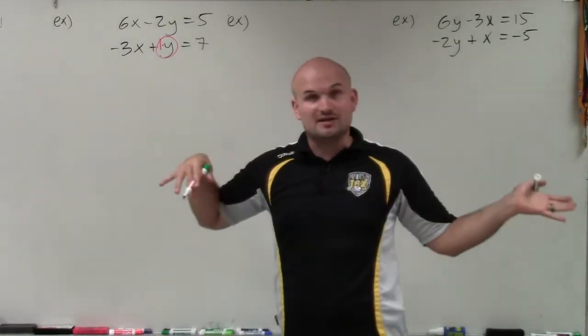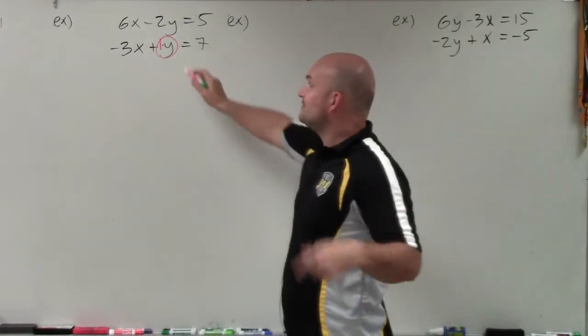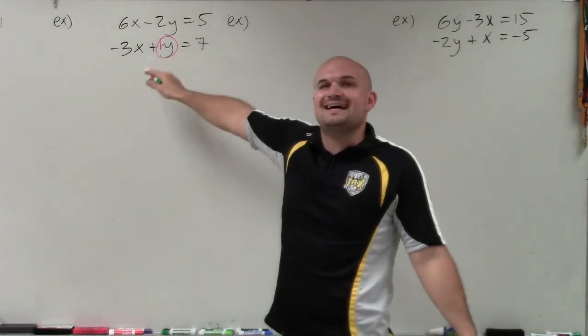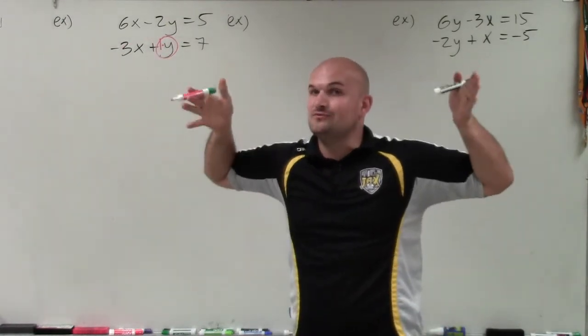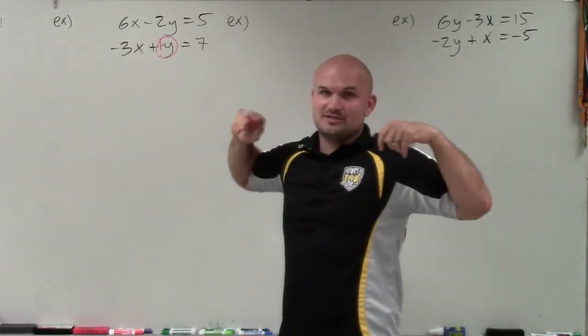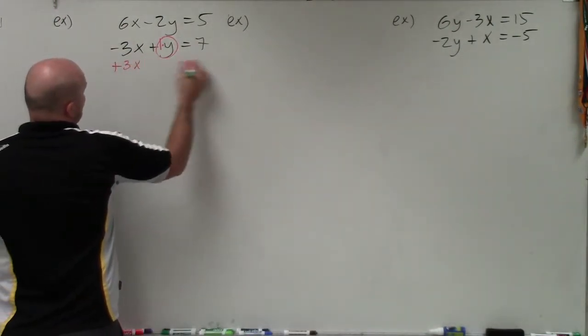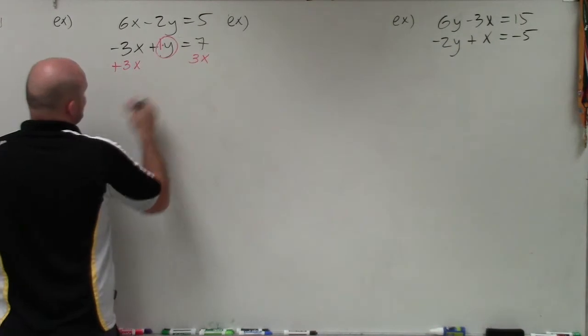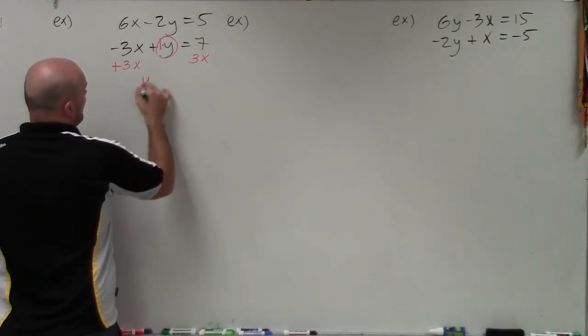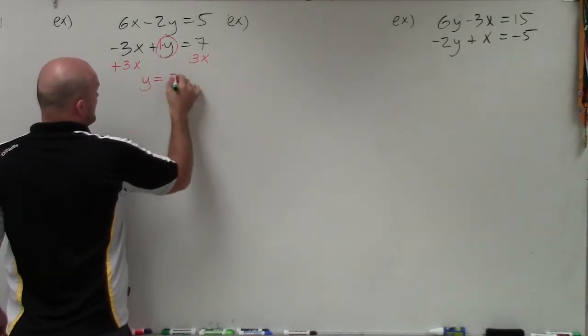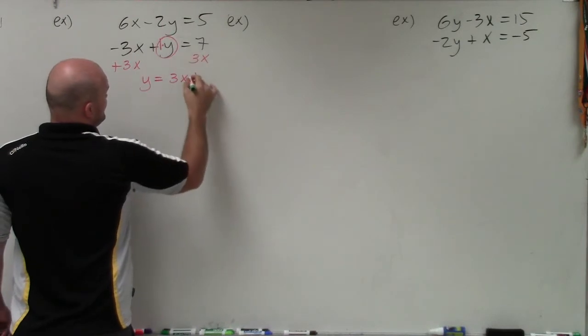You could obviously solve for any one of the other variables if you wanted to. However, I circled this one because that's going to be the easiest. When it has a coefficient of 1 or negative 1, that's the easiest one to solve for. Because all I got to do to solve for y is just get rid of that 3x. So I added 3x to both sides, and I'm left with y equals 3x plus 7.